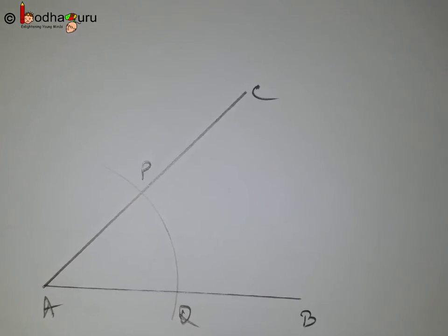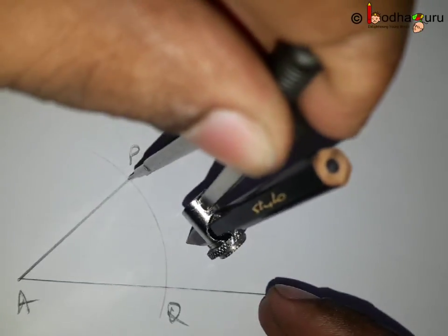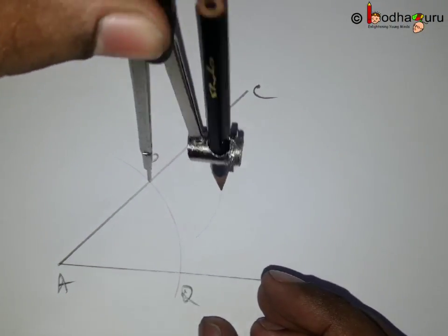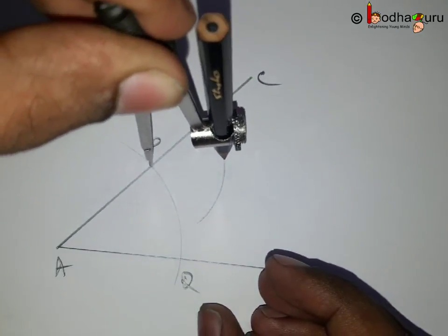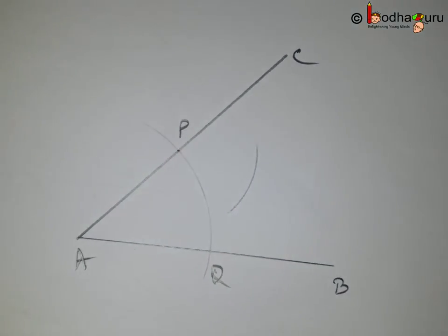Now, with P as centre and any radius slightly more than half of the length of PQ, draw an arc in the interior of the given angle BAC.